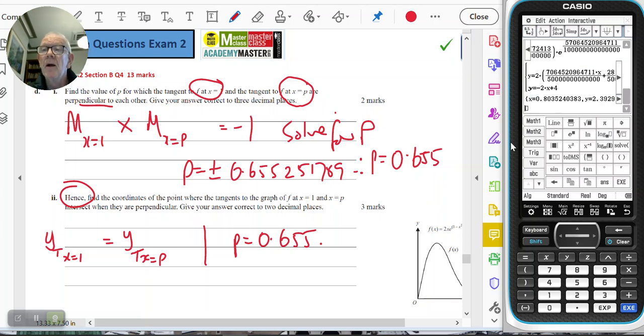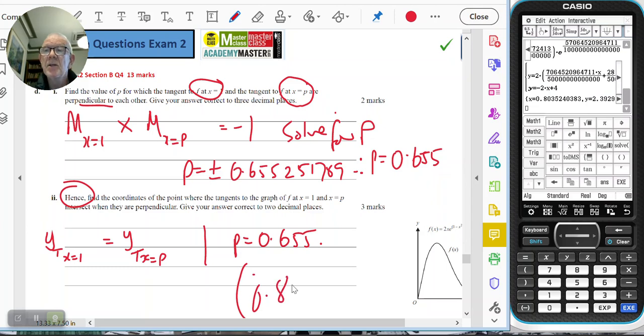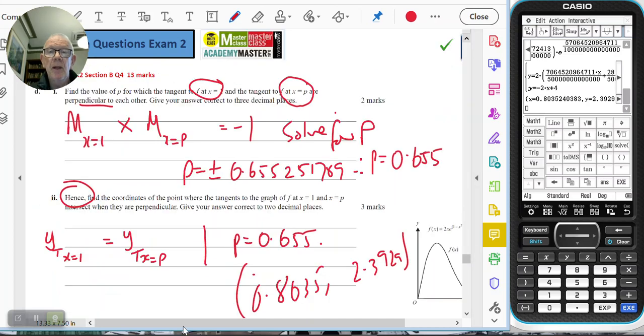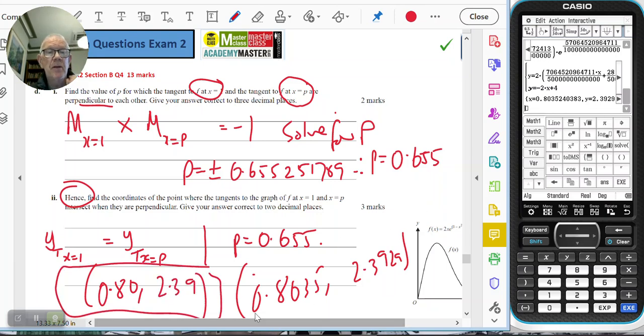And I get the coordinates 0.8035 and 2.3929, which to two decimal places gives us 0.80 and 2.39. So that is part D1 and 2.